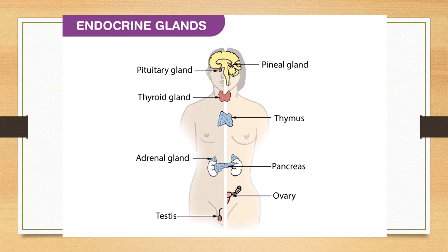The endocrine glands shown here include: the pineal gland, pituitary gland, thyroid gland, thymus gland, adrenal gland on top of the kidneys, pancreas, and ovary and testis. These are all endocrine glands which secrete different hormones and pour their secretions into the blood.